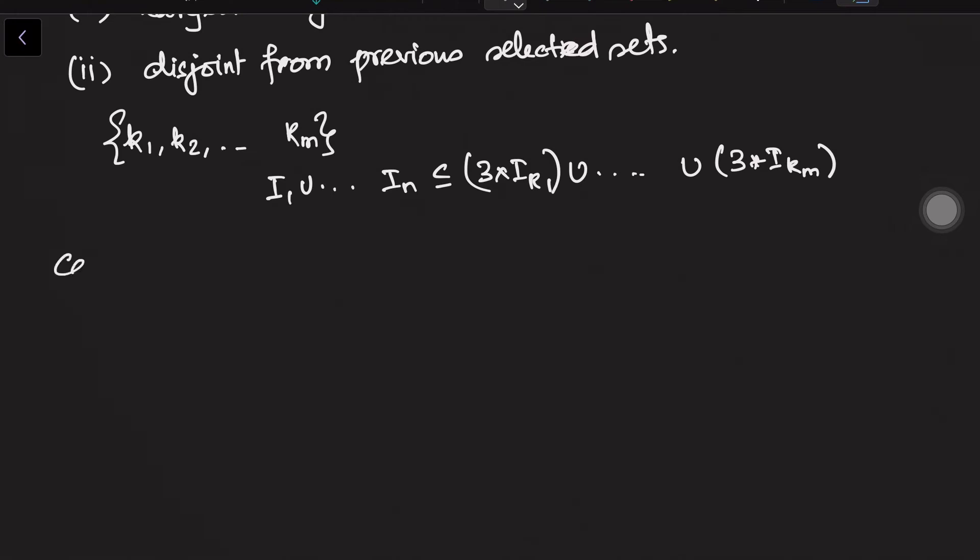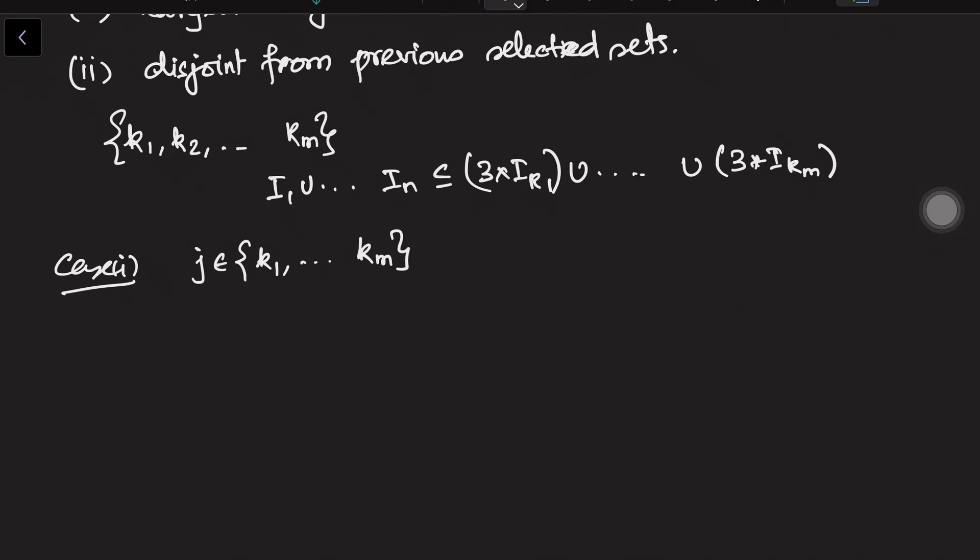There are two cases. First case, let us say j belongs to - I take any i_j and I will prove the statement. So let us take j belongs to {k_1, ..., k_m}. If j is one among the elements, then i_j equals some i_ki which will be contained in 3 times i_ki. So we are done.